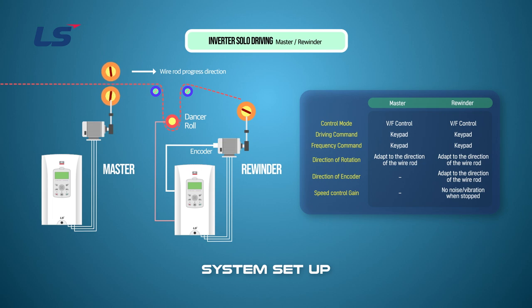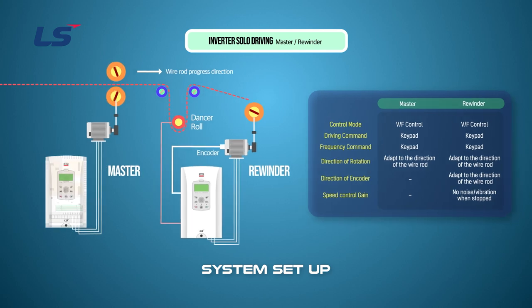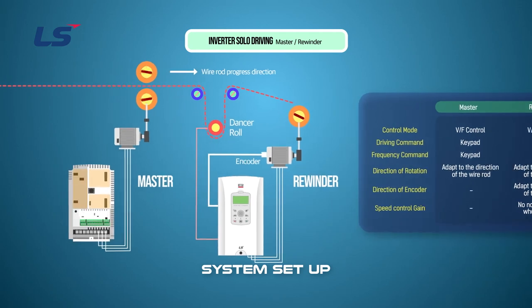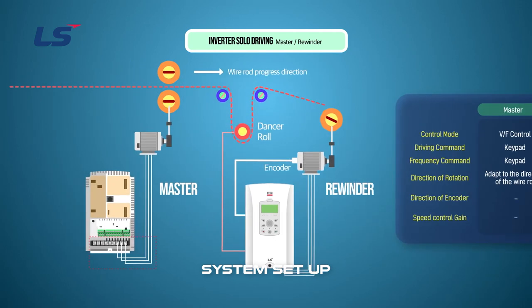Check the rotation direction of the motor, and if it is in the opposite direction, change two of the three phases of the motor connection.